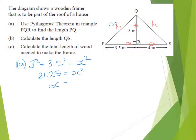Then we can do 3 squared plus 3.5 squared gives us 21.25. And then X has got to be the square root of that, which is 4.6 centimeters. There's part A.